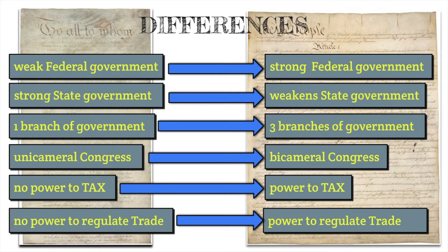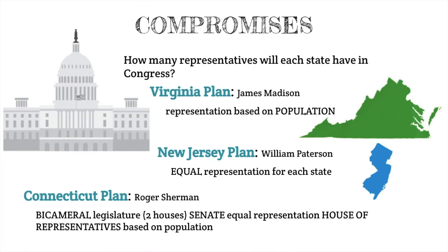Going from a weak national government to a strong national government is going to make some people concerned about increasing the power and authority of this national government. That's a debate we're going to have when we discuss the Federalists and the Anti-Federalists. But within the writing of the Constitution, we do need to talk about a couple of key compromises that were made.